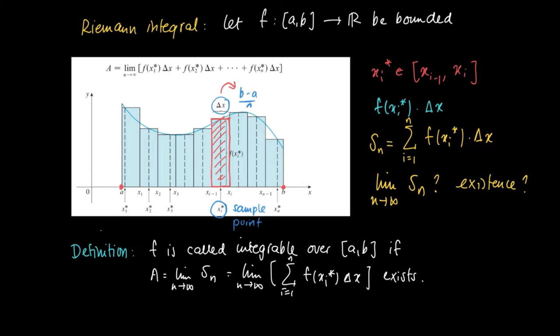In that case, we will write a = ∫[a to b] f(x)dx. And this is called the definite integral of f over [a, b].